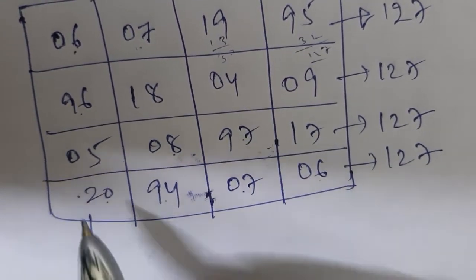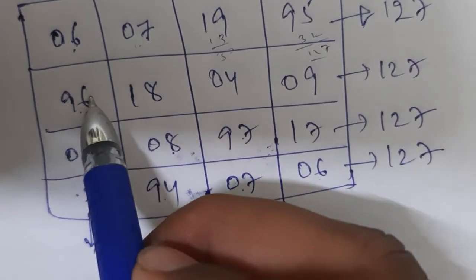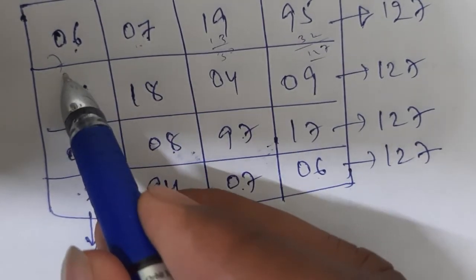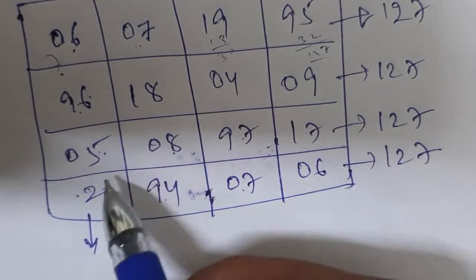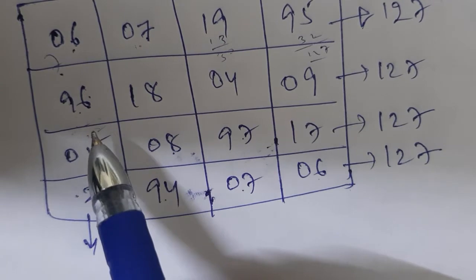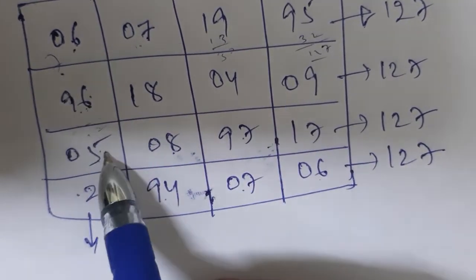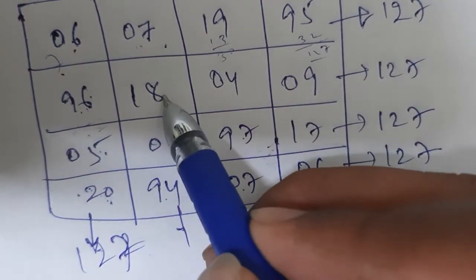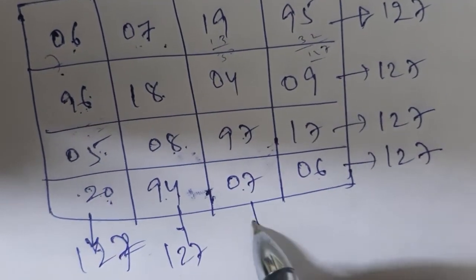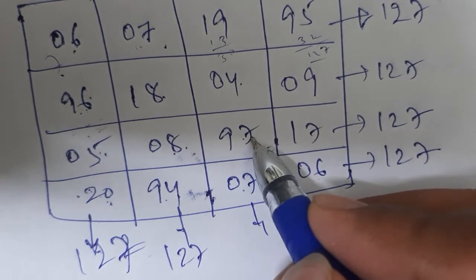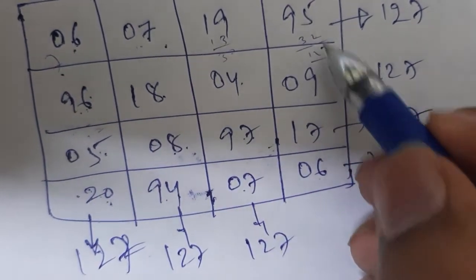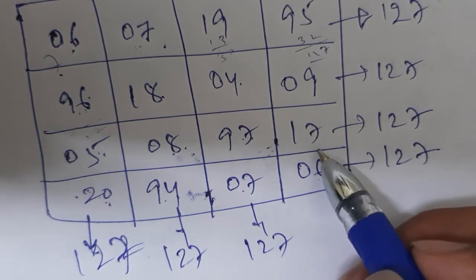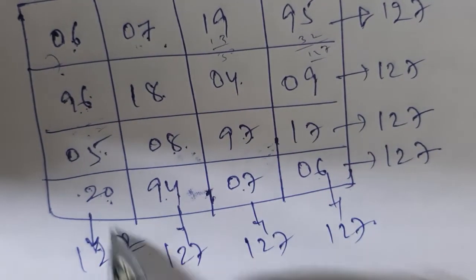Now let us consider the column elements. For the first column: 6 plus 96 plus 5 plus 25 gives 127. The second column: values summing to 127. The third column: 19 plus 4 plus 22 gives 127. And the fourth column: 95 plus 9 plus 104 plus 17 plus 6 equals 127. So all column sums equal 127.